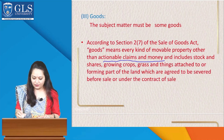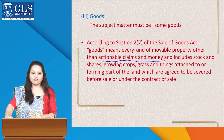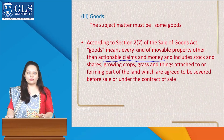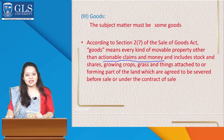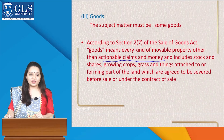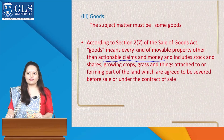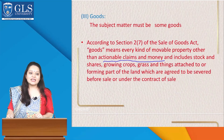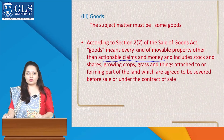Actionable claims and money are not covered under the definition of goods. The definition of goods talks about movable goods only. For example, if Mr. A agrees to sell his farmhouse located at Sanat to Mr. B for 30 lakh rupees — yes, it is a sale, but it is not covered under the Sale of Goods Act 1930. Why? Because land is immovable. The Sale of Goods Act deals only and only with movable goods — something that we can shift from one place to another, except actionable claims and money.